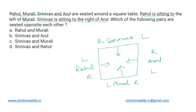If we had made Arul sit in the other direction, then towards his right there would have been Rahul, and there would have been no space left for Srinivas. Hence, Arul sits in this direction so that towards his right we can place Srinivas. This is the possible arrangement.